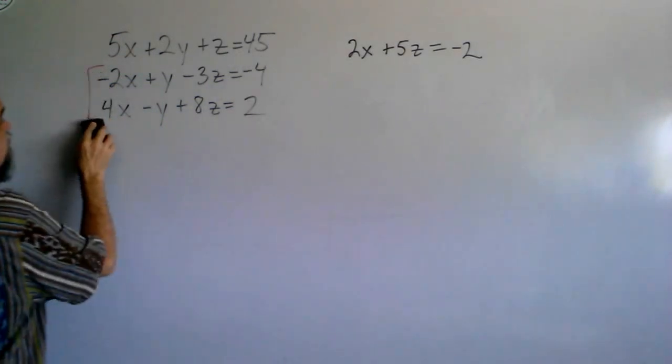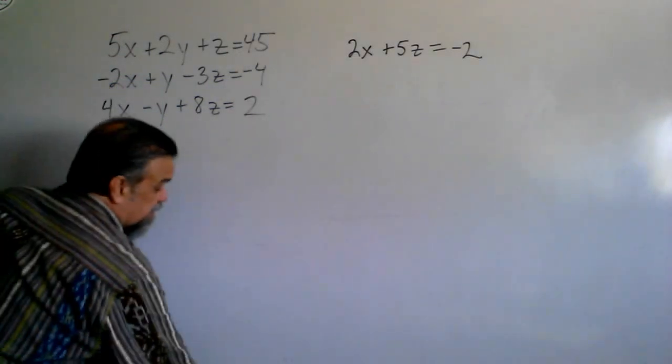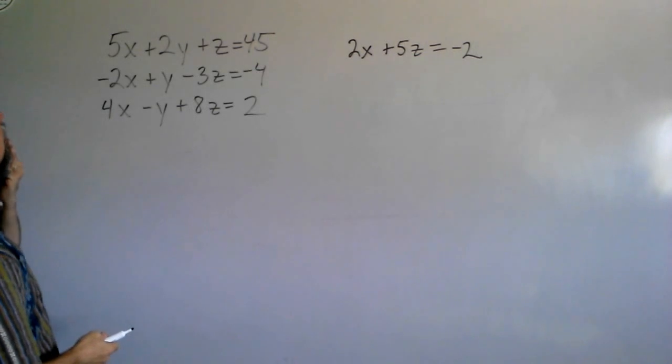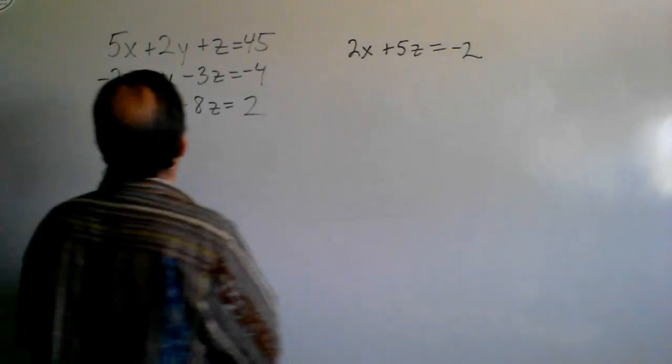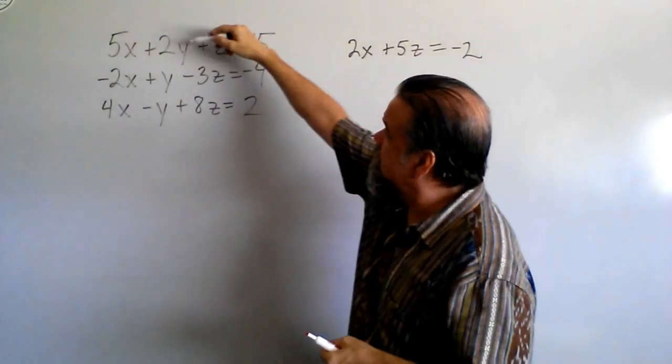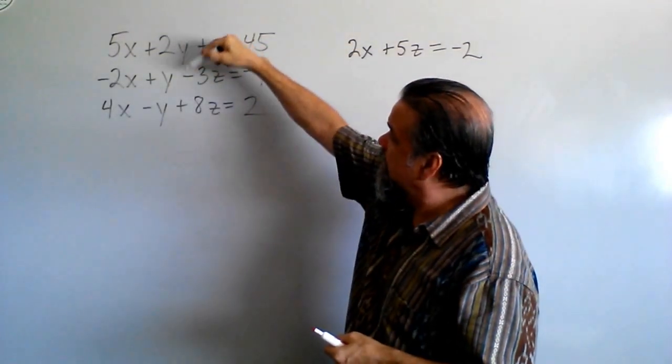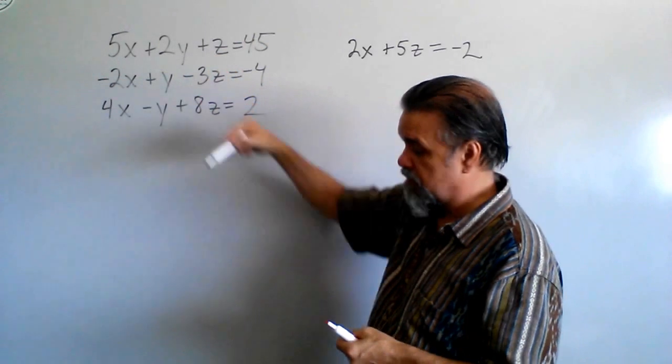What are we going to do? Well, we're no longer taking the bottom two equations. Now we're going to take the top equation with another equation, and I think we ought to do the top equation that has a 2y and two times the bottom equation, okay?